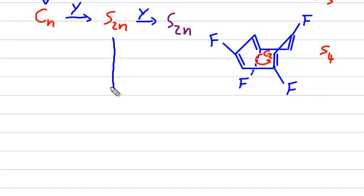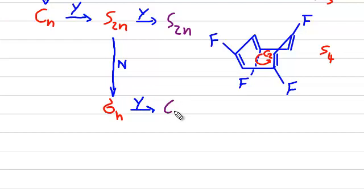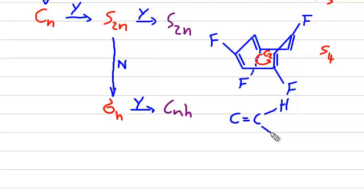If you do not have a S2N symmetry operation, which is possible, then we need to ask if there is a sigma H reflection plane. If there is a horizontal reflection plane, then we call this point group CNH. The example here is transdichloroethene. Let's start with the double bond between the two carbon atoms. Here we have hydrogen, chlorine, and here in trans position there's the other chlorine atom.